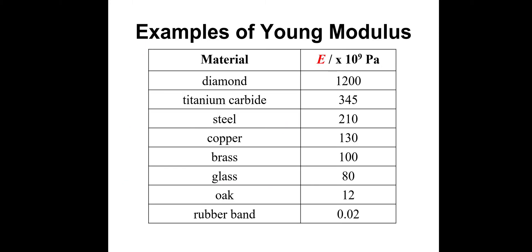Here are some examples of Young's modulus values: diamond 1200 GPa, titanium carbide 345 GPa, steel 210 GPa, copper, brass, glass, oak 12 GPa, and rubber 0.02 GPa. As you can see, all of these are in gigapascals — giga meaning times 10 to the 9 — which is the normal way to give these values.